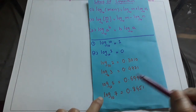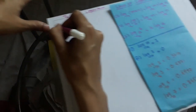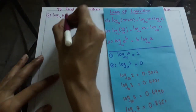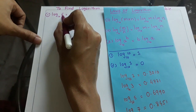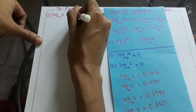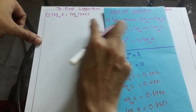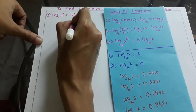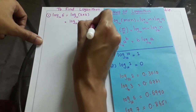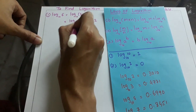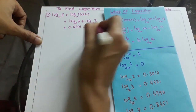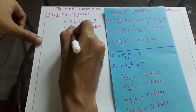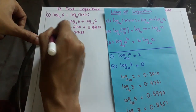Let's start with the first example: log of 6. To find log 6, we first factorize: 6 = 3 × 2. Applying the formula log(m × n) = log m + log n, we get log 3 + log 2 = 0.4771 + 0.3010 = 0.7781. This is the value of log 6. You can verify this in a calculator.